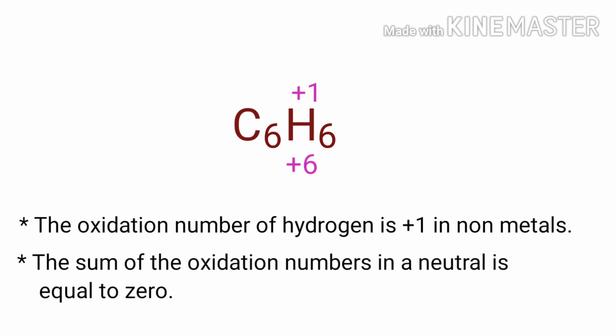As per rule, in a neutral compound, the numbers along the bottom must add up to 0. So the number under C6 must be minus 6.